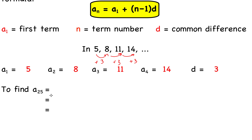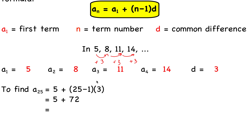Suppose we want to find a sub 25, the 25th term. We plug into the formula: n is 25, a sub 1 is 5, so we get 5 plus 25 minus 1, which is 24, times d equals 3. So 24 times 3 is 72, and adding 5 gives us 77. The 25th term is 77.